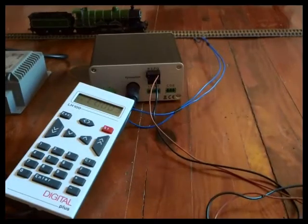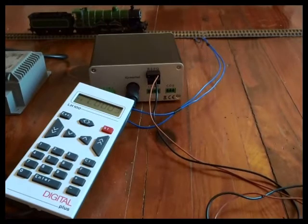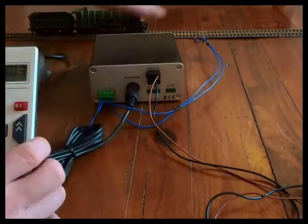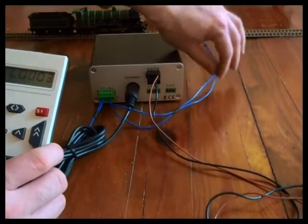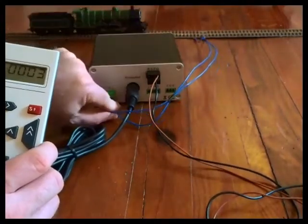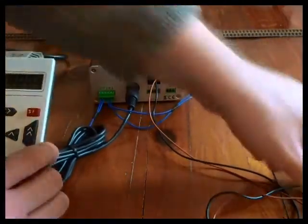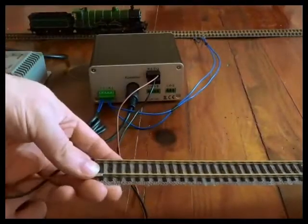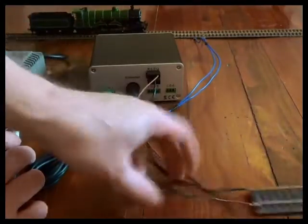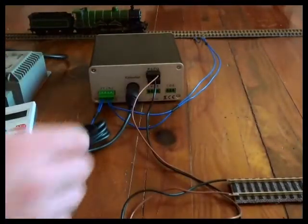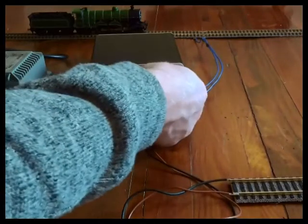For the next part of my film, I've modified my arrangement. I've now put in a bigger bit of track as my main track, which is wired to J and K, and I've also introduced a shorter bit of track as my programming track, which is wired into P and Q.